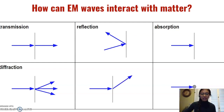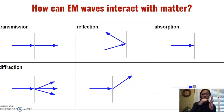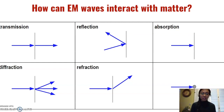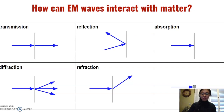Another way EM waves can interact with matter is that some waves can go through the second medium but bend at an angle as they enter it. This is different from transmission because the wave is not going straight through — it's bending at an angle. This is known as refraction. An example of refraction is looking through water. Images appear distorted because the light hitting objects in the water is being refracted at an angle, as water is a new medium causing the light to refract.